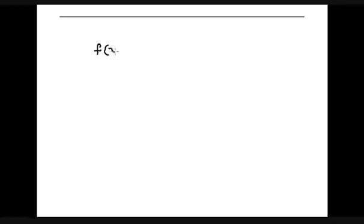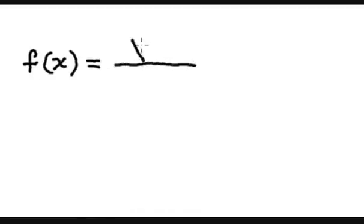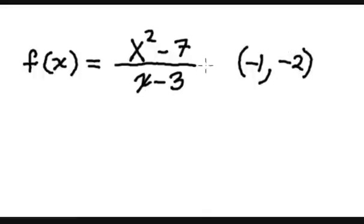Solution for question 14. The function is f of x is equal to x squared minus 7 over x minus 3, and the given point is negative 1, comma negative 2. I want to prove whether this point is on this graph.